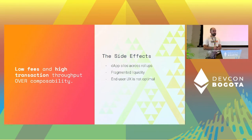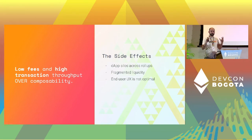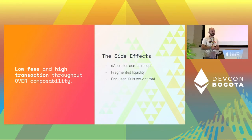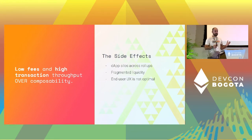However, there are some side effects. All these protocols and dApps are silos across all these rollups. The liquidity is fragmented and the end-user experience across using all these rollups is not optimal. So it looks like there is a trade-off between low fees and high transaction throughput over composability.